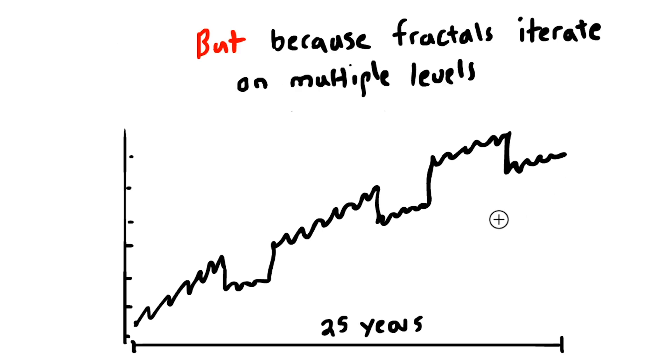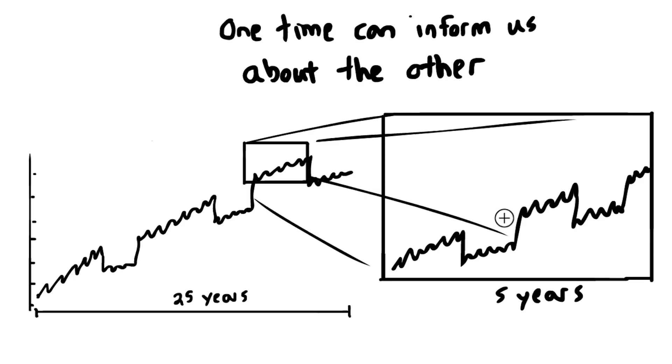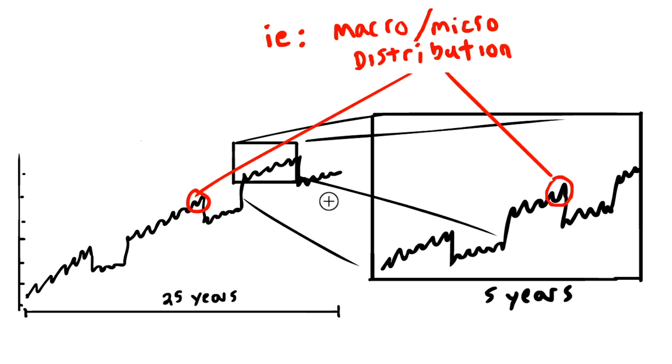But if the fractals iterate on multiple levels, one time can also inform us about the other time. Maybe in this section right here, when we're up high, we're not on these larger accumulations. We actually see the same thing playing out. Maybe if you were to zoom in even closer, you might see something more similar. Maybe it doesn't look exactly the same. Maybe it's more like an irregular thing when you get up close. But the point is that the fractals are the same. So one time—meaning a shorter time span—can often inform a larger time span or vice versa. In both cases, you would look at this and say, 'Well, this is a macro distribution into an accumulation.' And then this is a micro, a smaller distribution into an accumulation.